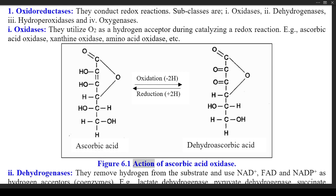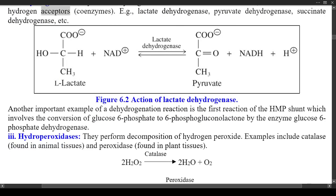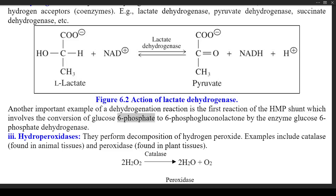Figure 6.1 shows the action of ascorbic acid oxidase. (2) Dehydrogenases — they remove hydrogen from the substrate and use NAD⁺, FAD, and NADP⁺ as hydrogen acceptors (coenzymes); e.g., lactate dehydrogenase, pyruvate dehydrogenase, succinate dehydrogenase, etc. Figure 6.2 shows the action of lactate dehydrogenase. Another important example of a dehydrogenation reaction is the first reaction of the HMP shunt, which involves the conversion of glucose 6-phosphate to 6-phosphogluconolactone by the enzyme glucose 6-phosphate dehydrogenase.